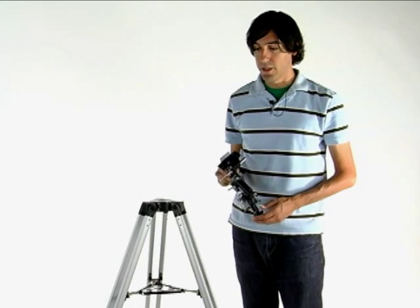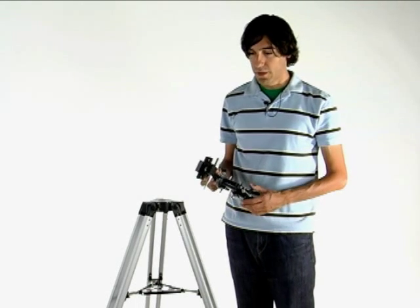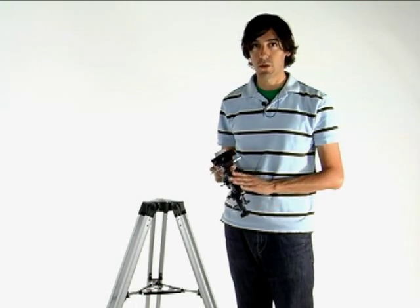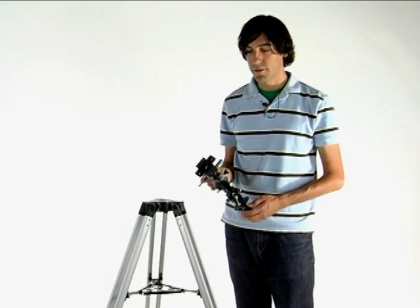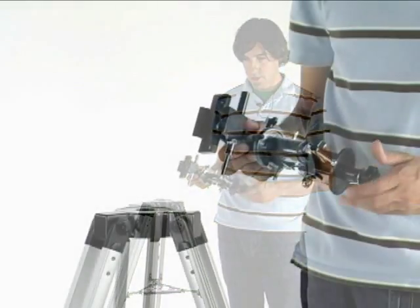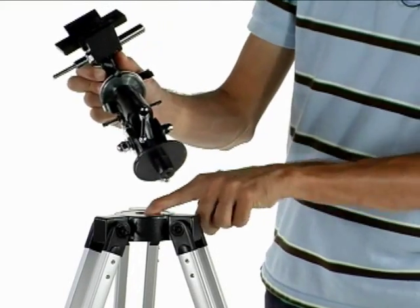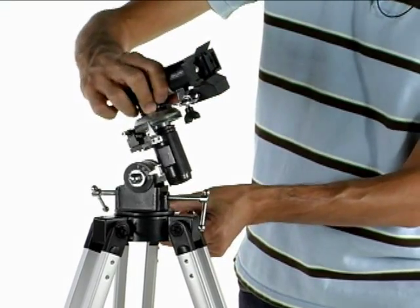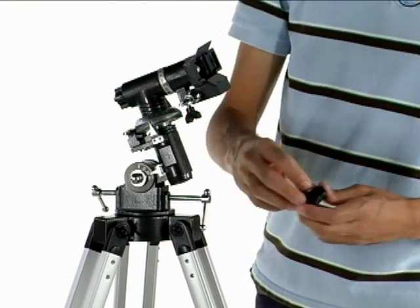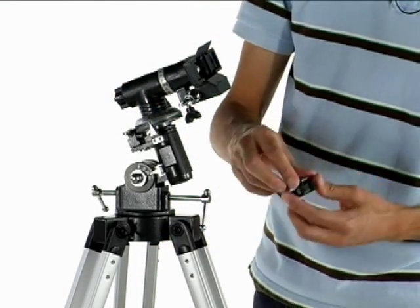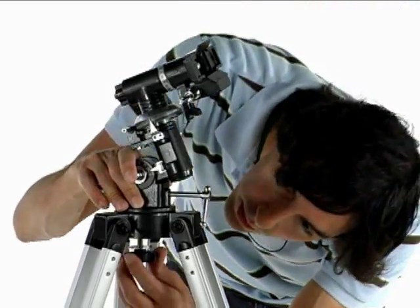Now that this tripod is fully raised we can start with the next section which will be connecting the equatorial mount to the tripod itself. It will actually go right through this little hole here. And your washer and your thread will go through the bottom.